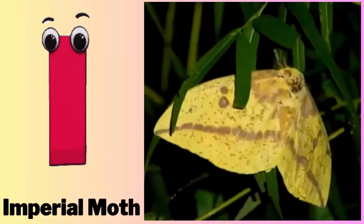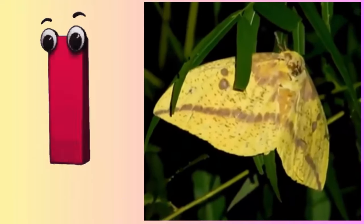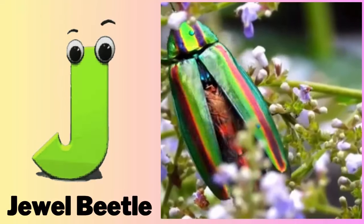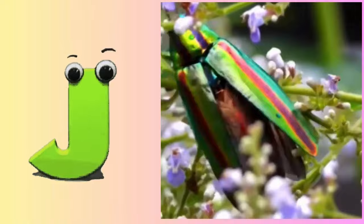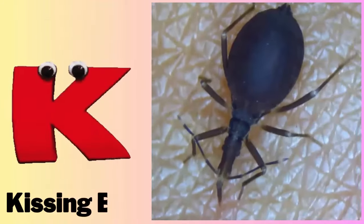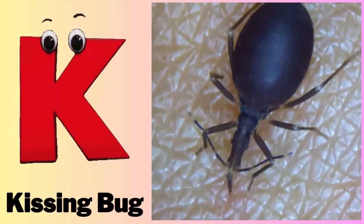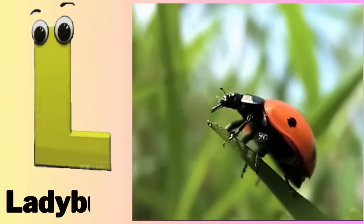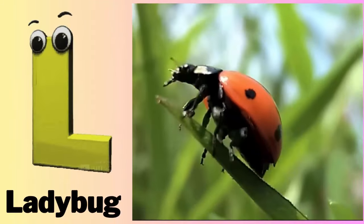I - I for imperial moth. J - J for jewel beetle. K - K for kissing bug. L - L for ladybug.